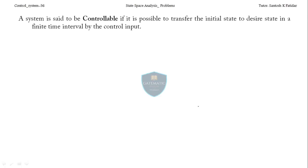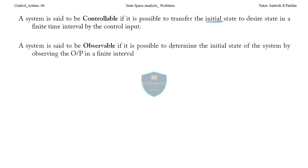A system is said to be controllable if it is possible to transfer the initial state to the desired state in a finite time interval by control input. So if it is possible to transfer the initial state to the desired state, you can change that in a finite time interval by the control input.